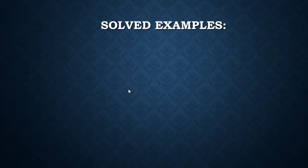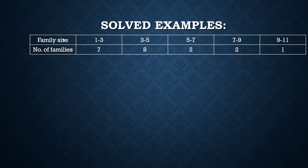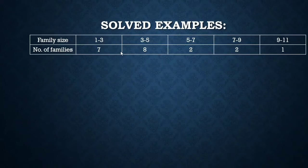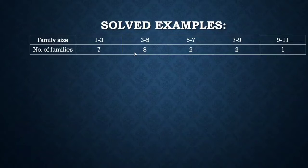Looking at a solved example: calculate the mode of grouped data where family size is divided into 1–3, 3–5, 5–7, 7–9, and 9–11, with number of families 7, 8, 2, 2, 1. To calculate mode we first need the modal class, which is the class with the highest frequency. The highest frequency is 8, corresponding to class 3–5, so 3–5 is our modal class.